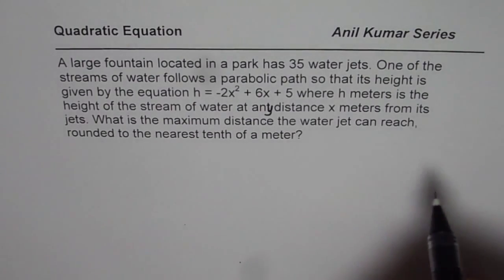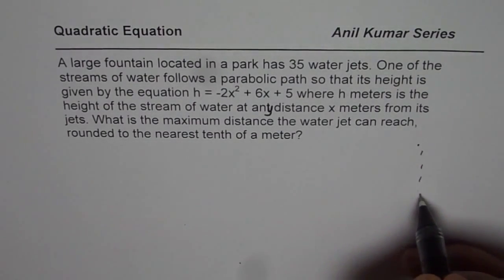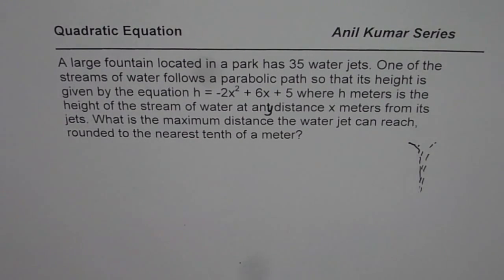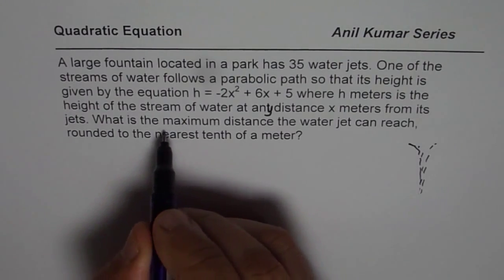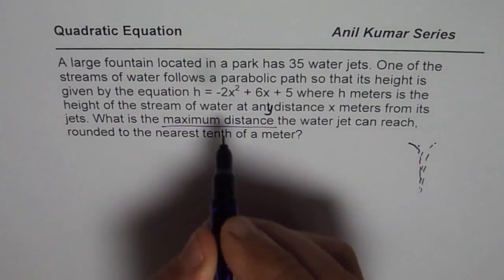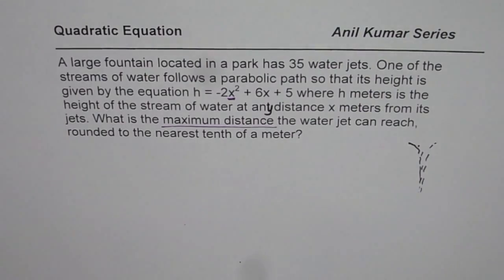So yes, fountains normally shoot upwards, right? So we are normally interested in the height of a fountain. But since the question is saying what is the maximum distance, and x is the distance, we should be finding the maximum distance, right?